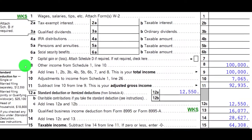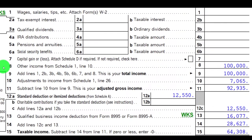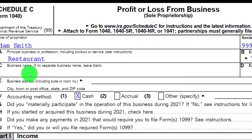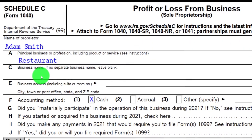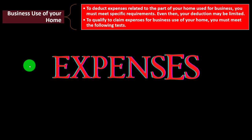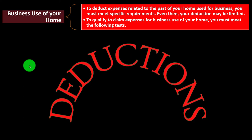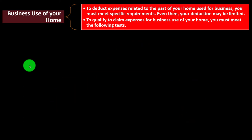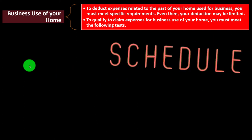We see here on the Tax Return, Schedule C rolling into Schedule 1, and Schedule 1 rolling into Page 1 of the Form 1040. Line 8 has the Schedule C, Profit or Loss from the Business — basically an income statement. We're now focusing in on the expenses, which are basically deductions related to the business, generally on the Schedule C or related schedules to the Schedule C.